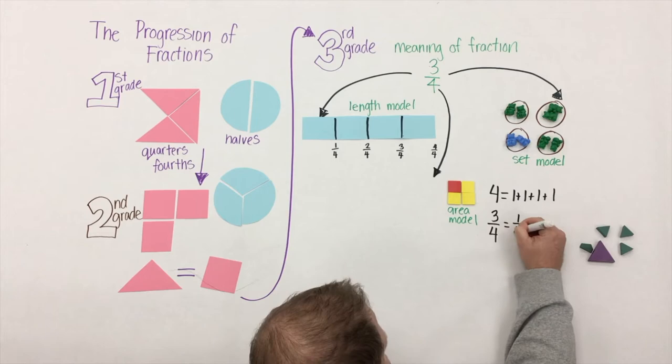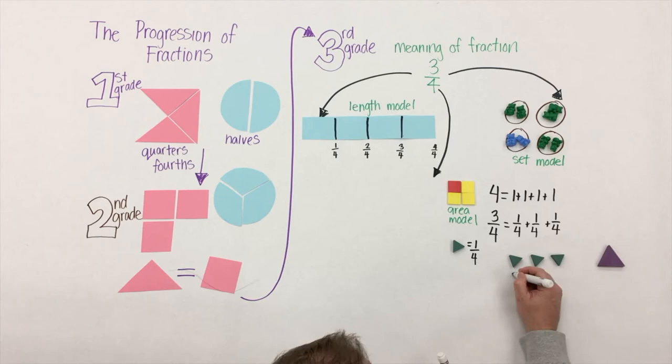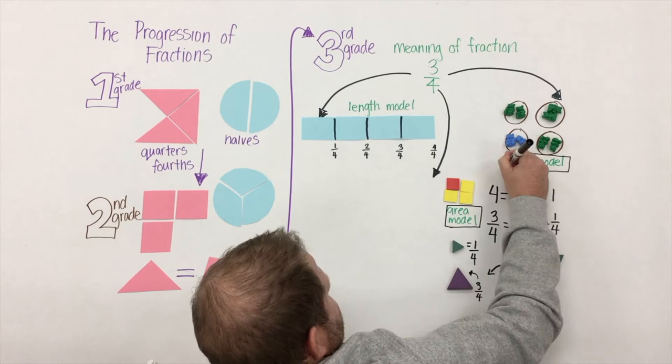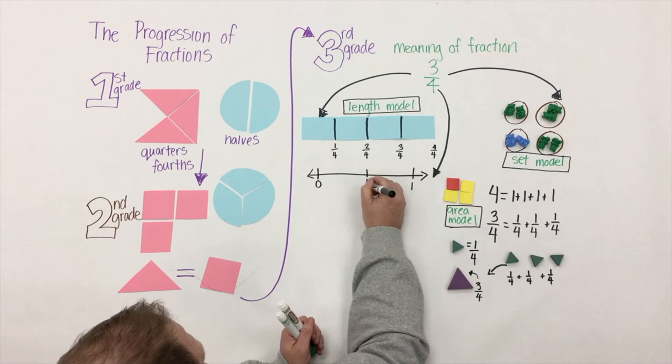As students are building this understanding, we need to make a connection back to their understanding of whole numbers. Just as whole numbers - take for example this number four - is built from units of one, fractions, in this case three-fourths, is built from three one-fourths: a fourth plus a fourth plus a fourth. Big understanding here.